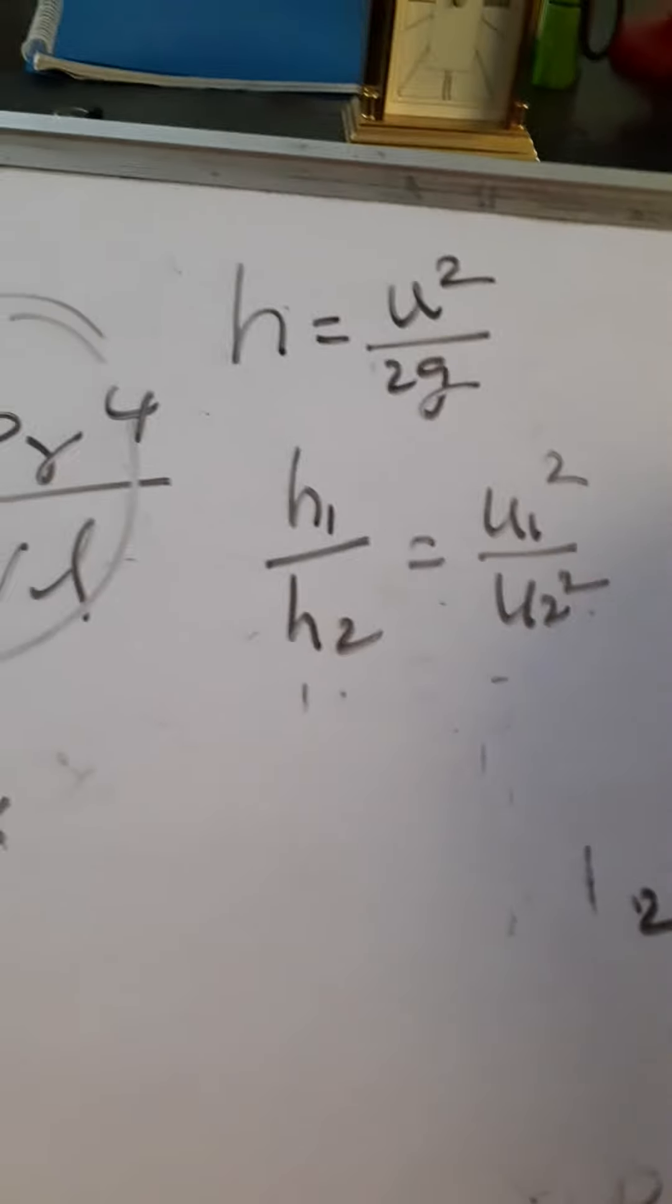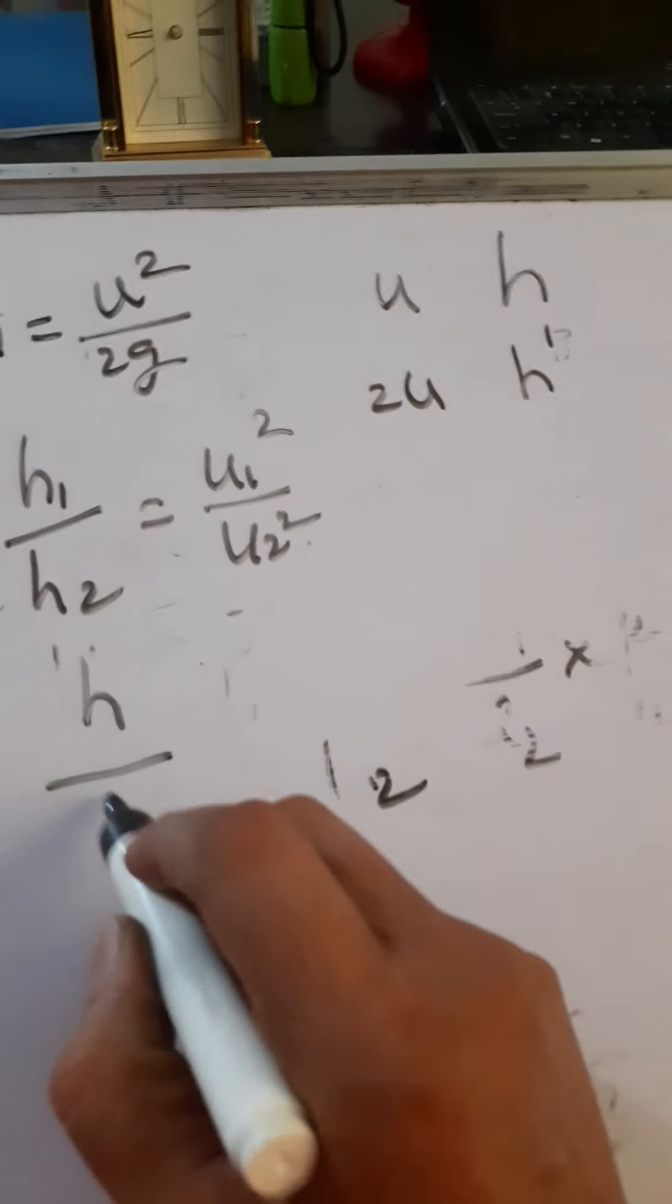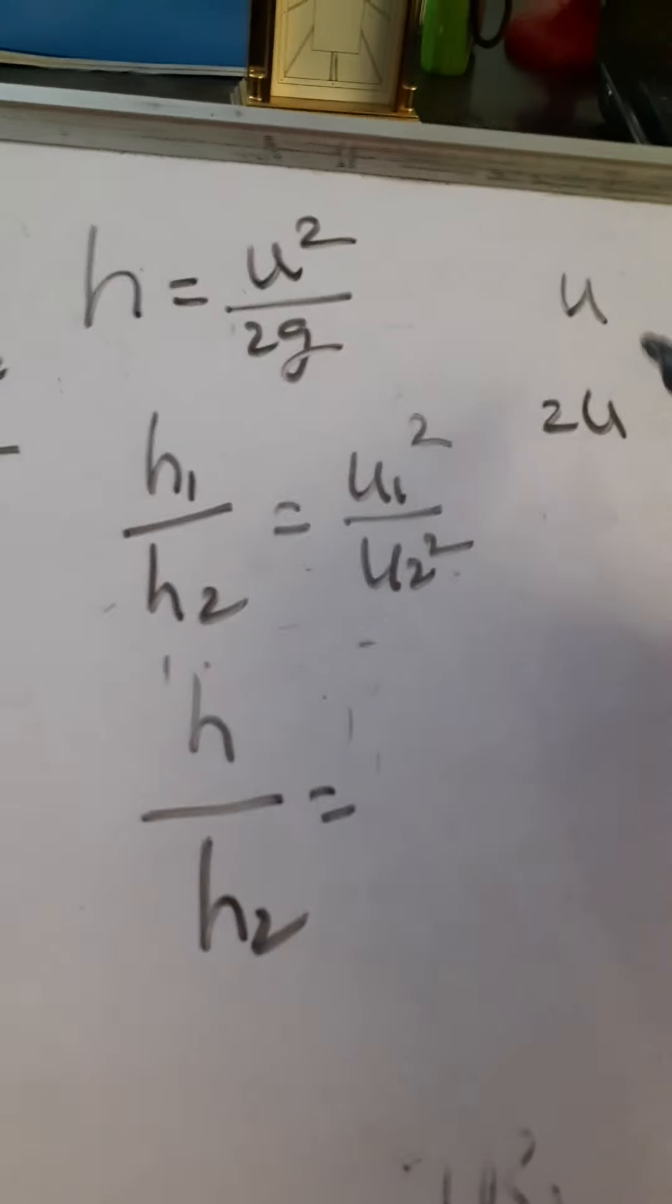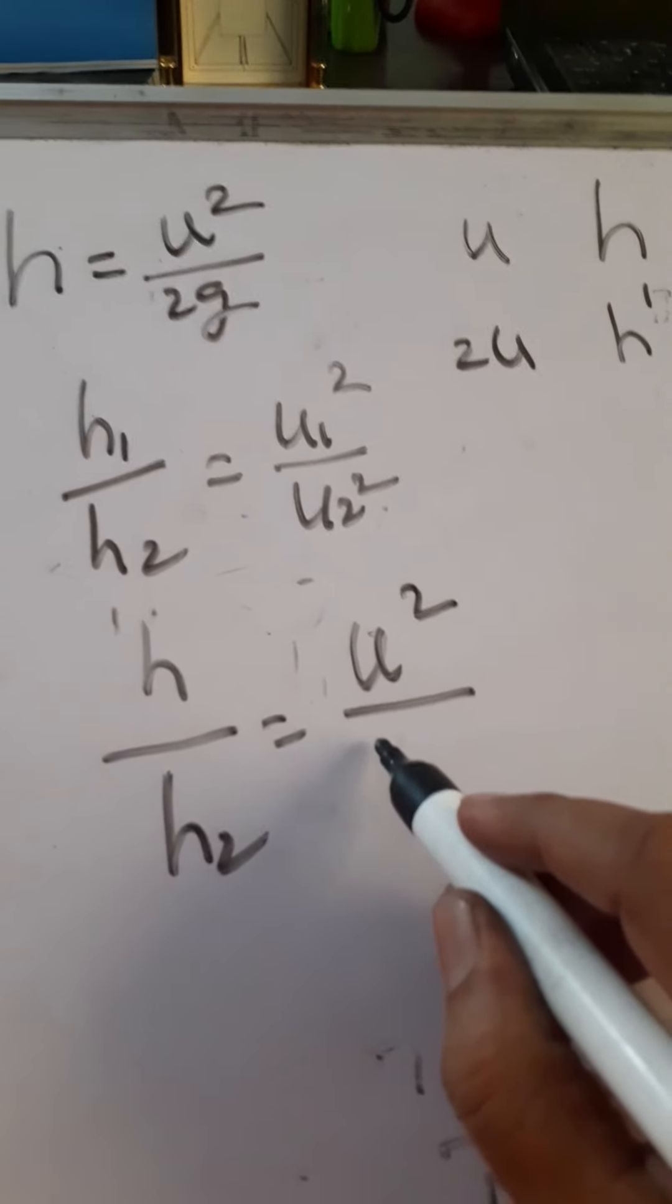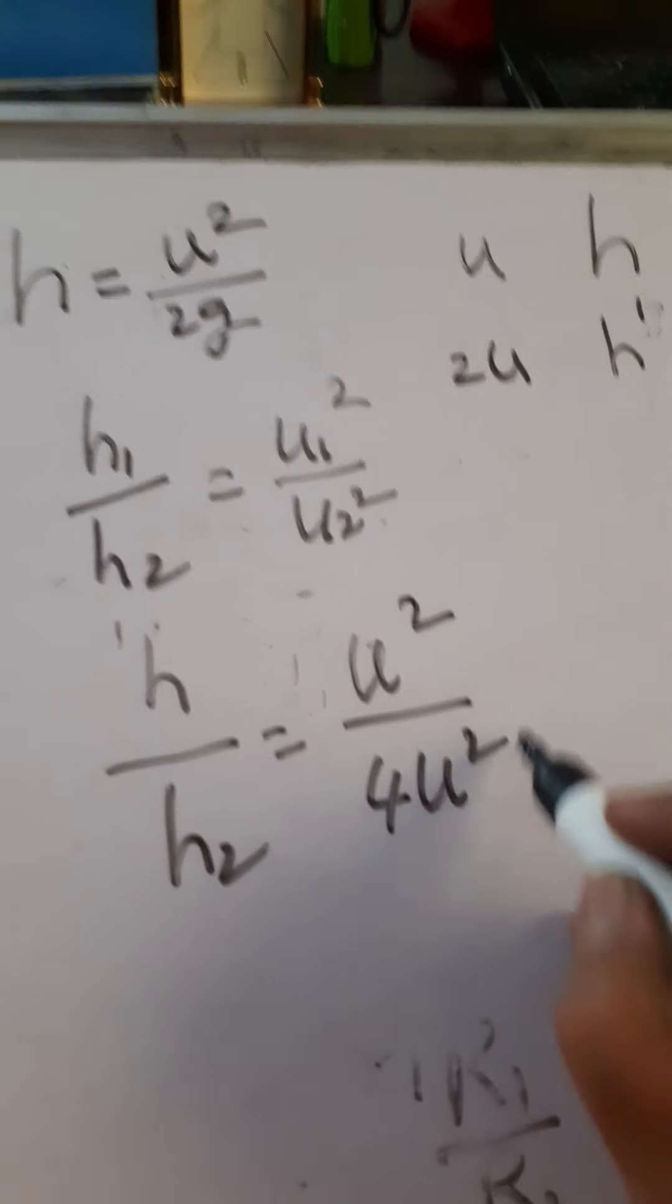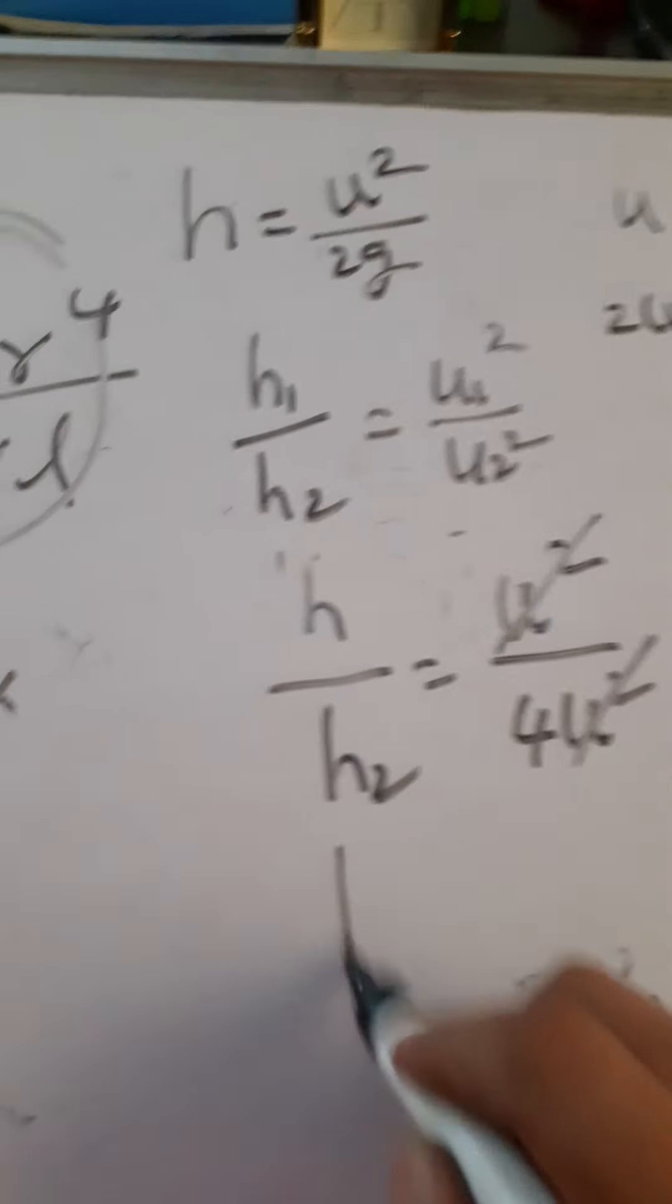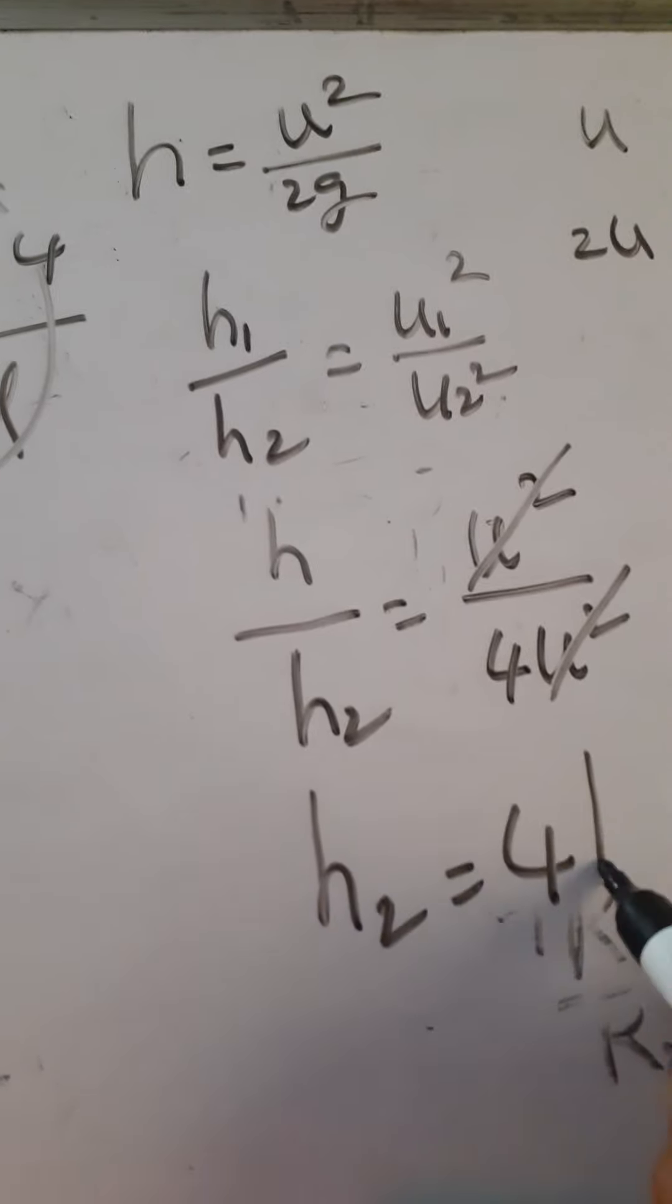H1 is H, H2 you have to calculate. U1 square by U2 square: U1 square means U square, U2 square means 2U whole square, 4U square. So U square cancels. Therefore H2 equals 4H.